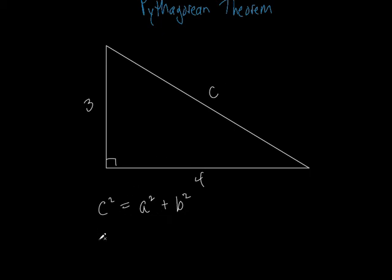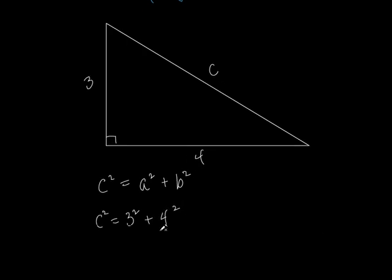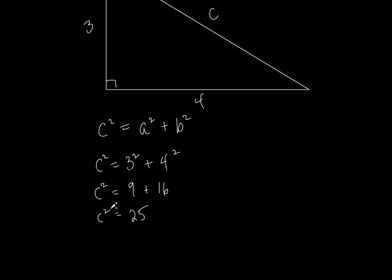We're solving for C. So C squared equals three squared plus four squared. C squared equals nine plus sixteen. C squared equals twenty-five. Get rid of the square — take the square root of both sides. So C equals five.